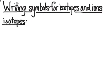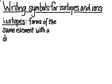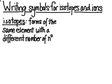So let's take a look at isotopes. Isotopes are forms of the same element with a different number of neutrons, and those neutrons are located in the nucleus. So isotopes are forms of an element that have different overall mass numbers, or the nucleus has a different structure, so they have a greater or lesser mass.